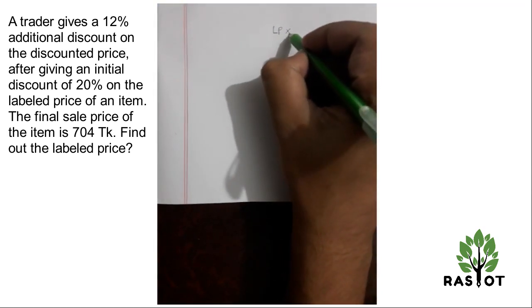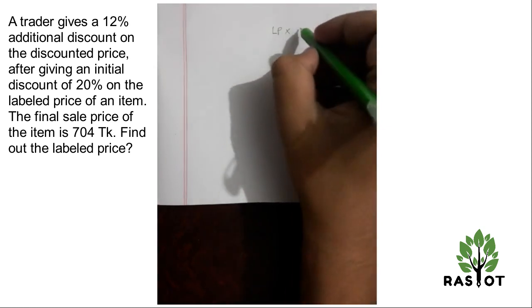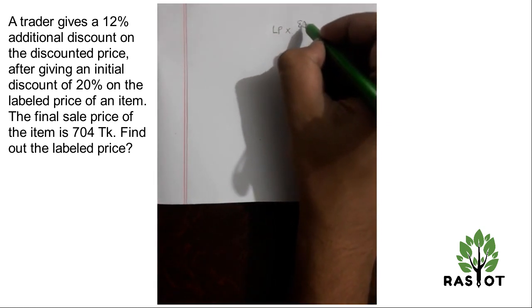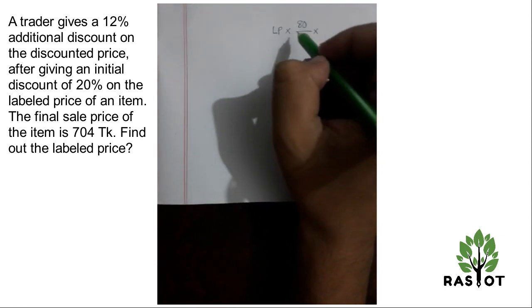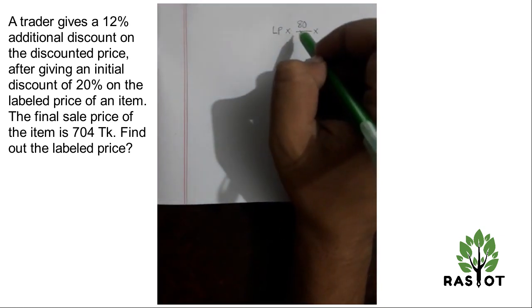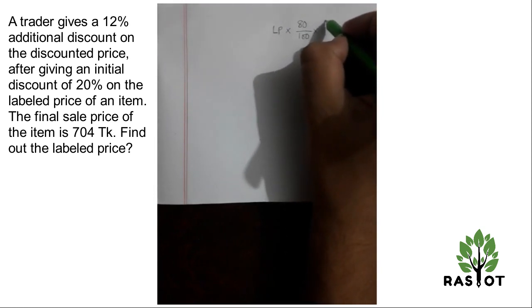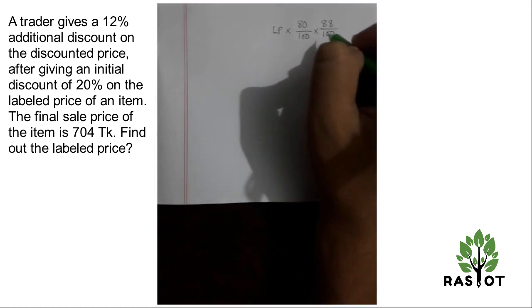After a discount of 20%, it means actually 80% of the price remains. Then on that price, there's a 12% discount, which means 88% of that discounted price.